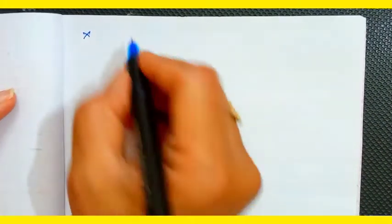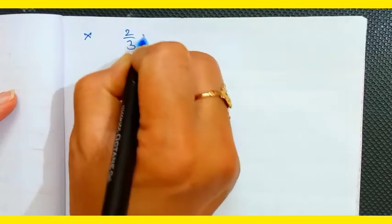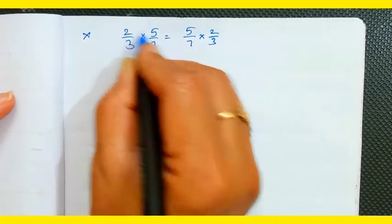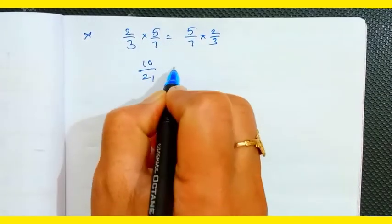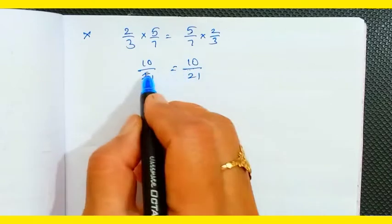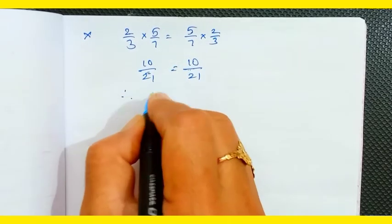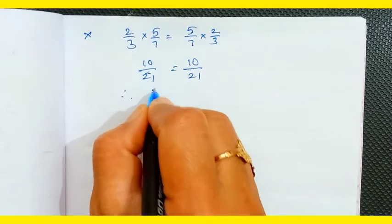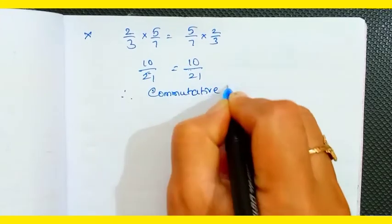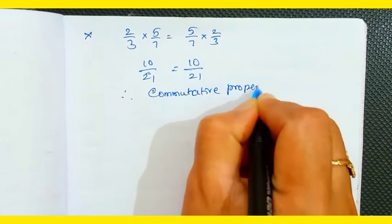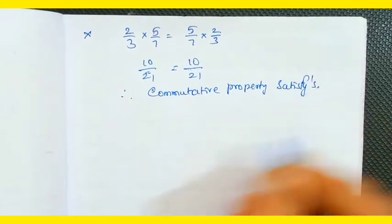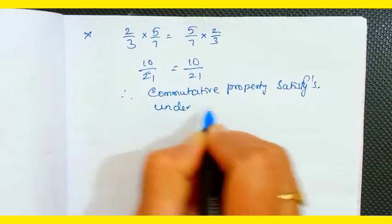For multiplication: 2/3 × 5/7 versus 5/7 × 2/3. Both give 10/21, so they are equal. Therefore, the commutative property satisfies for rational numbers under multiplication.